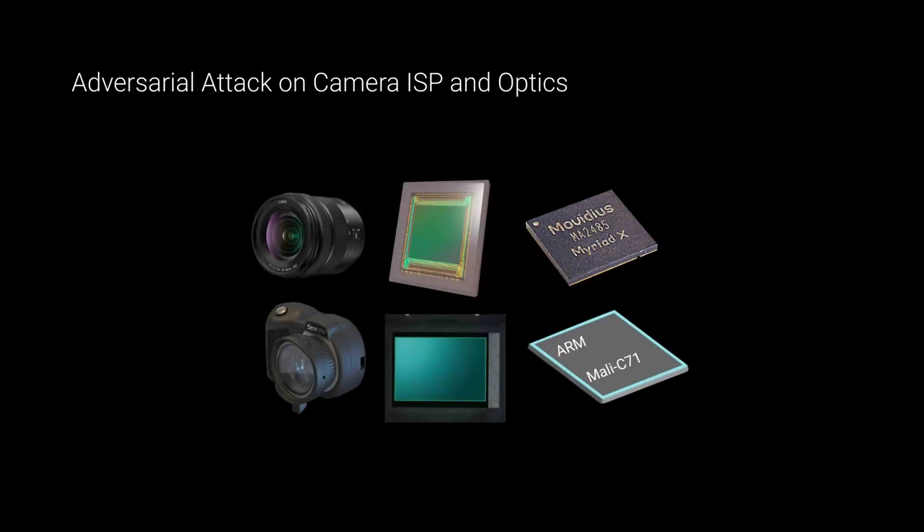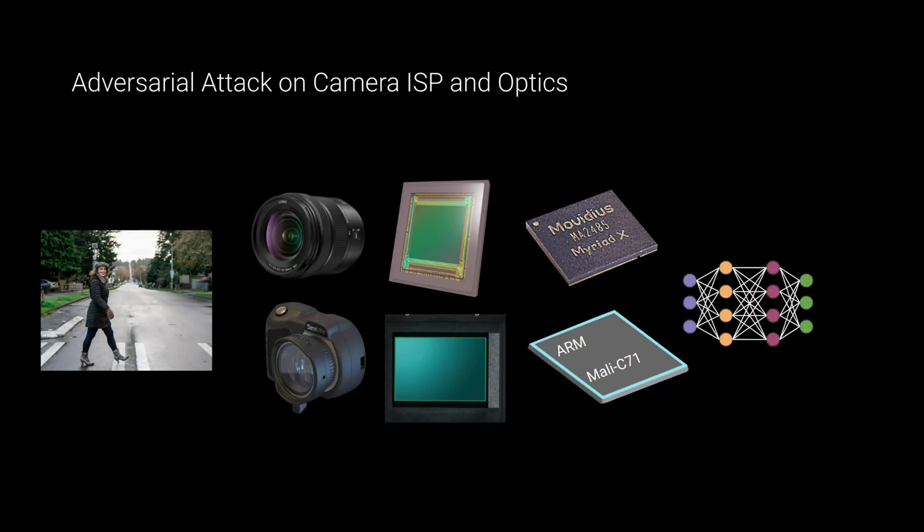Based on these observations, we introduce a new form of attack that specifically targets camera ISPs and optics. Unlike traditional attacks, this one is only observable by a set of targeted imaging pipelines, but not all of them, even when they use the same downstream classifier.